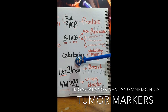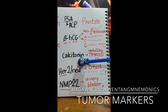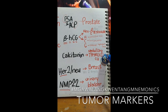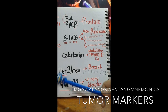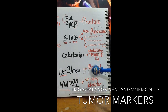You have calcitonin — the hormone produced by the C-cells, or parafollicular cells, of the thyroid gland. Remember it as a tumor marker for medullary thyroid carcinoma.